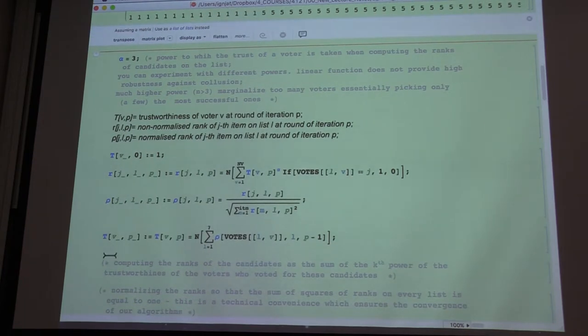and the number here corresponds to his chosen candidate. So you can see here the trustworthiness. So what is P? P is the index of the voter. Excuse me. P is the round of iteration.